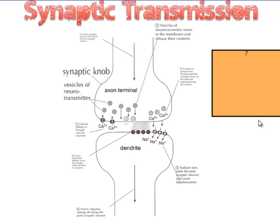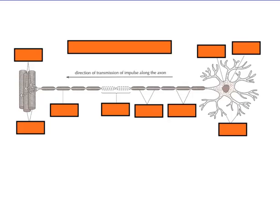We've got a quick video on synaptic transmission. Synaptic transmission is what happens in between two nerve cells — it's the connection between the axon terminal and the dendrite of the next neuron or nerve cell.